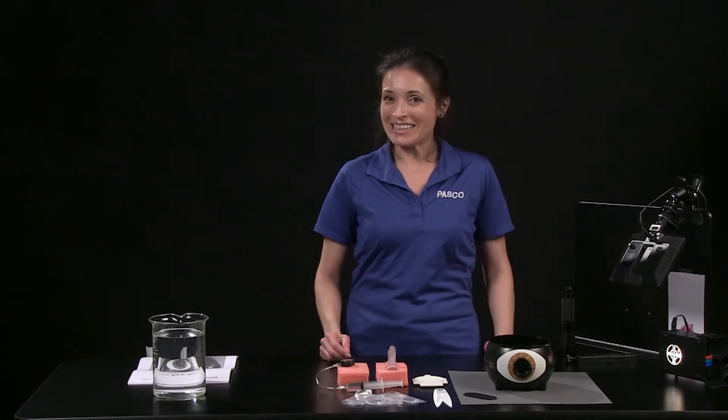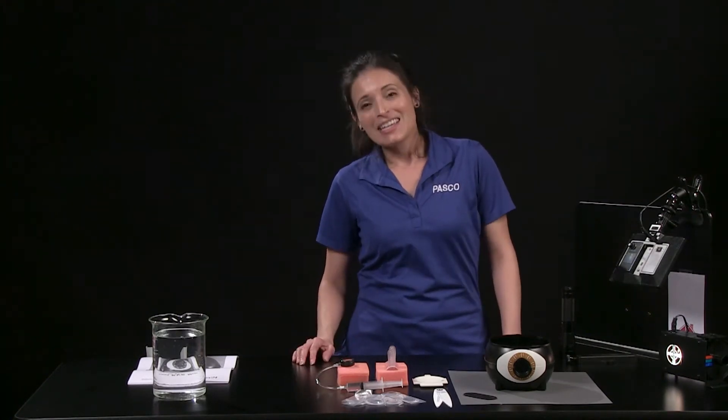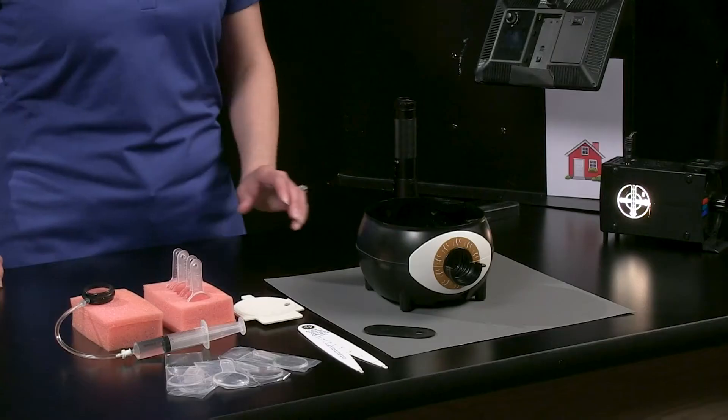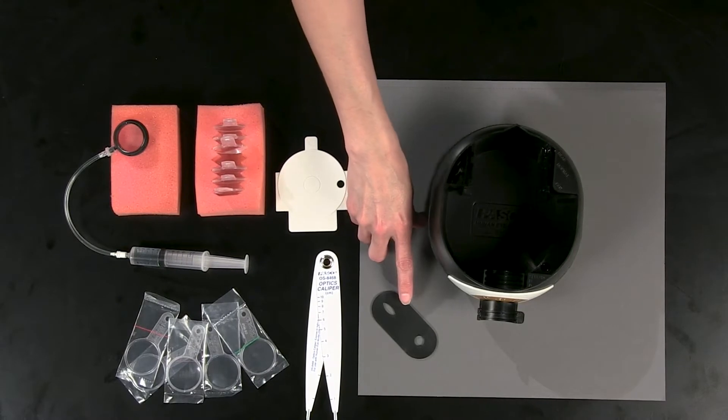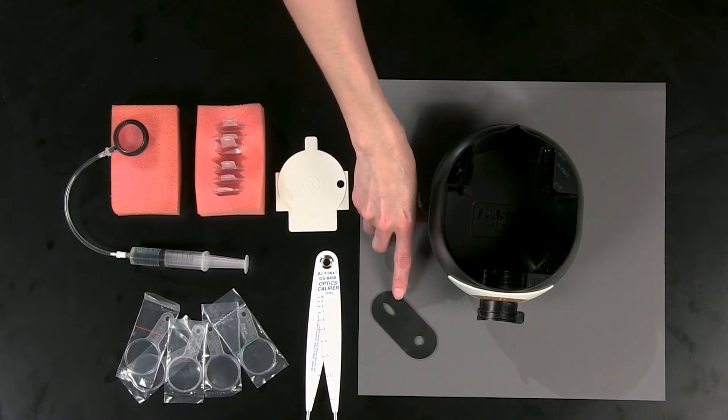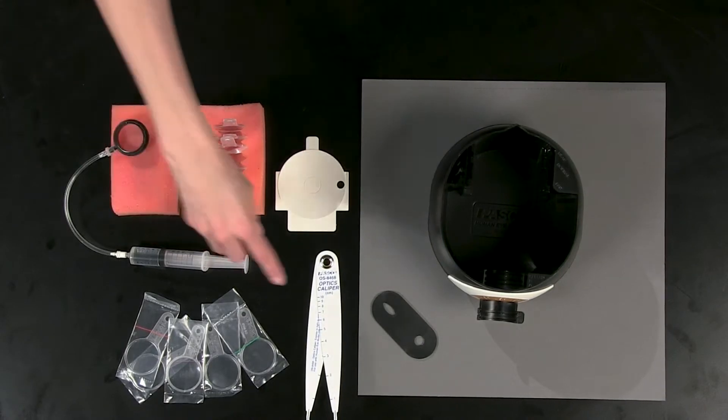Pasco's human eye model helps shed light on how the parts of the eye work together to make vision possible. The model comes with two sets of six convergent and divergent lenses, one pupil aperture with human eye pupil shape and cat eye pupil shape, one retina screen, and an optics caliper.